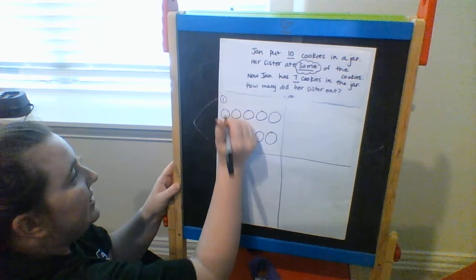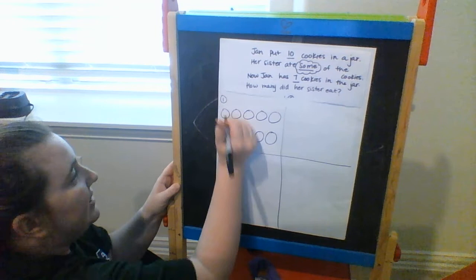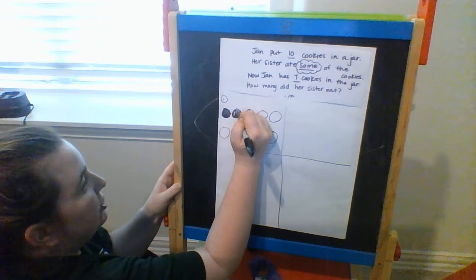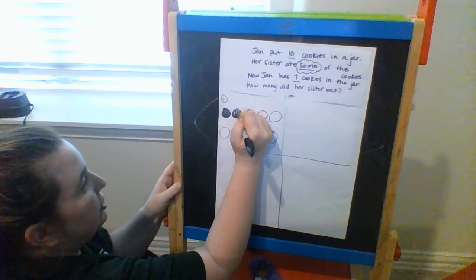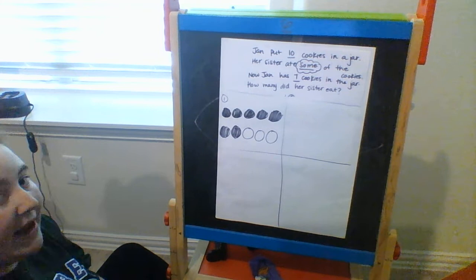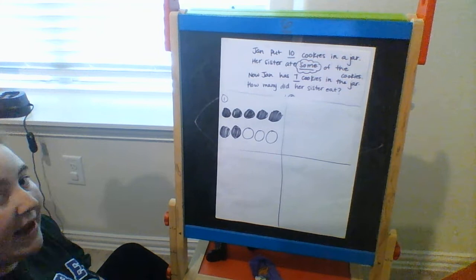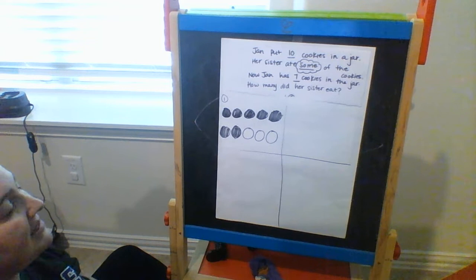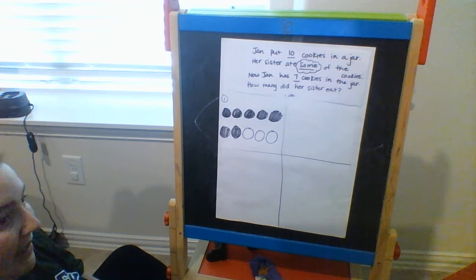Now I'm going to show how many she still has — she still has 7. So I'm going to color in 7 cookies to show that those are the cookies that Jan still has: 1, 2, 3, 4, 5, 6, 7. Now, by showing what I do know, I can see what I don't know. I'm showing that she still has 7 in her jar, which means 3 must have been taken away by her sister.